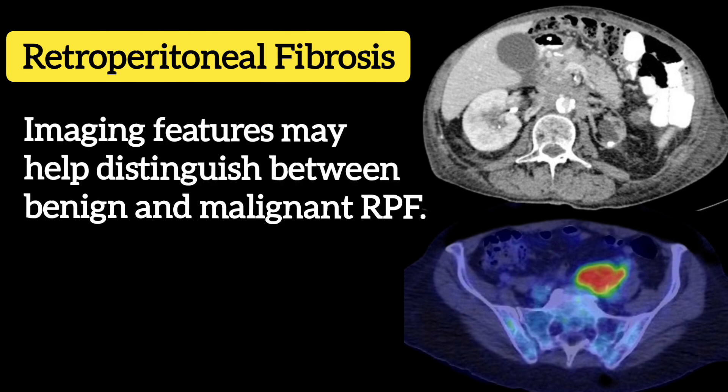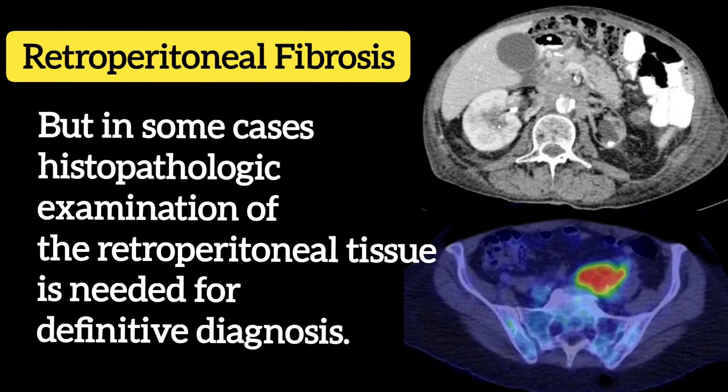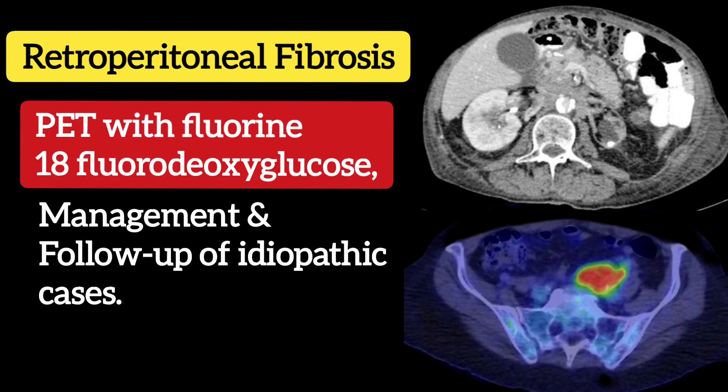Imaging features may help distinguish between benign and malignant RPF, but in some cases histopathologic examination of the retroperitoneal tissue is needed for definitive diagnosis. Positron emission tomography with fluorine-18-fluorodeoxyglucose also plays an important role in management and follow-up of idiopathic cases.